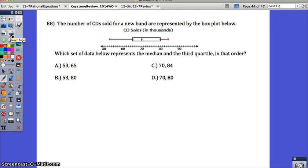Problem number 88. The number of CDs sold for a new band are represented by the box and whisker plot below. Which set of data below represents the median and the third quartile in that order? Remember that the median is going to be that middle of the box where you draw that line. So the median lines up with 70. And the third quartile, well, here's the first quartile. Here's the third quartile. So that lines up with 80. So you're looking for one that says 70 is the median, 80 is the third quartile. Your correct answer would be D.